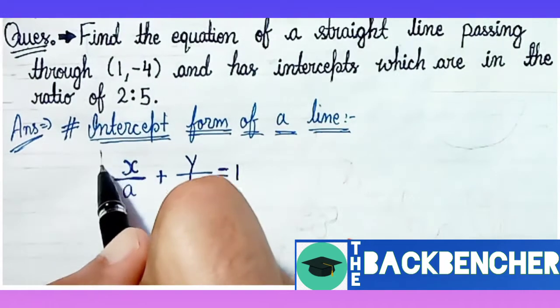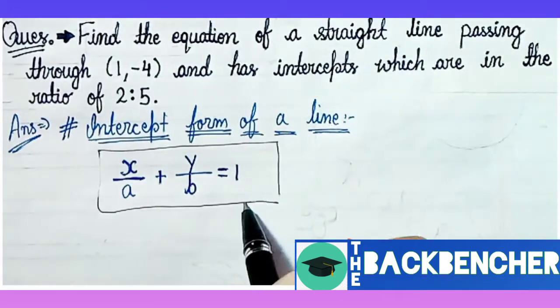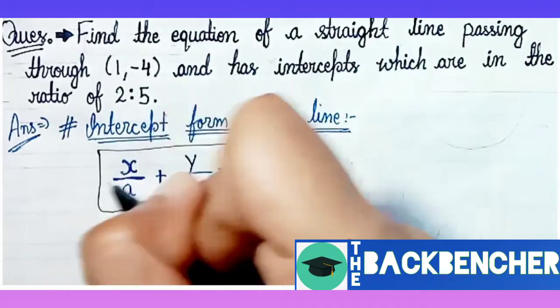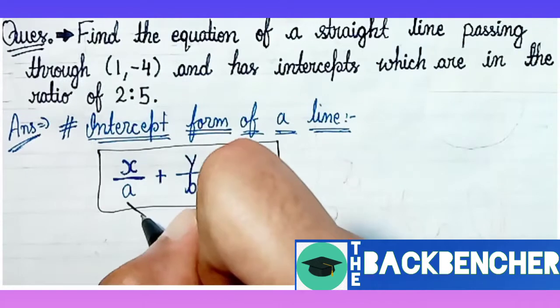First of all, what is the intercept form of a line? I have written it here. The intercept form of a line is x/a + y/b = 1. This is the intercept form of a line.